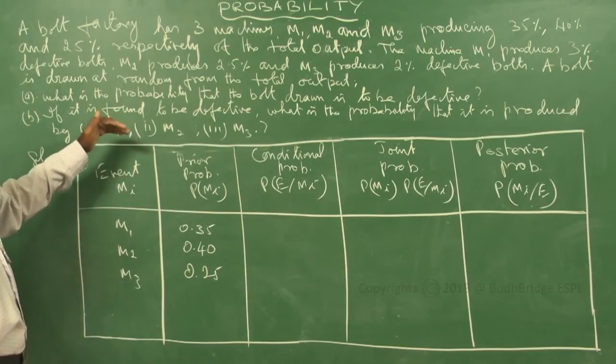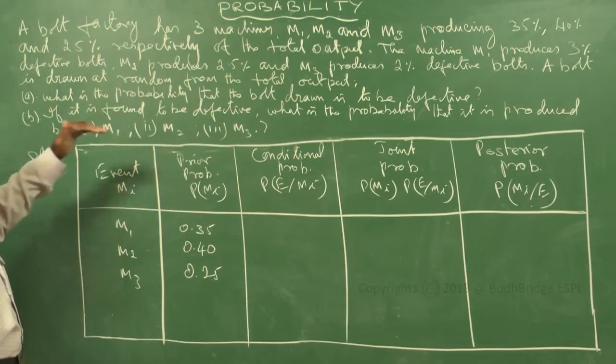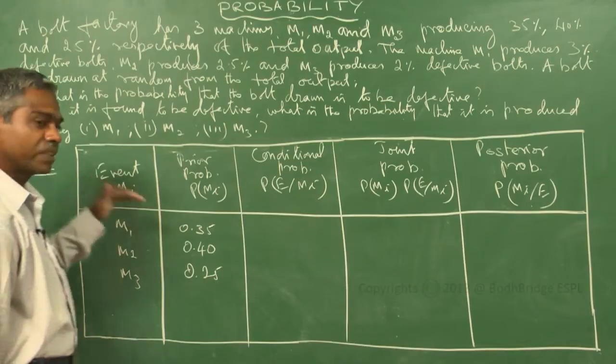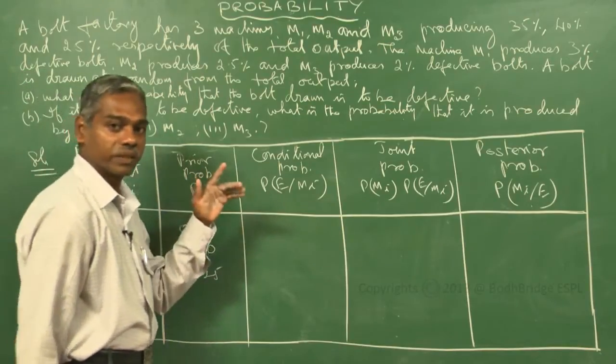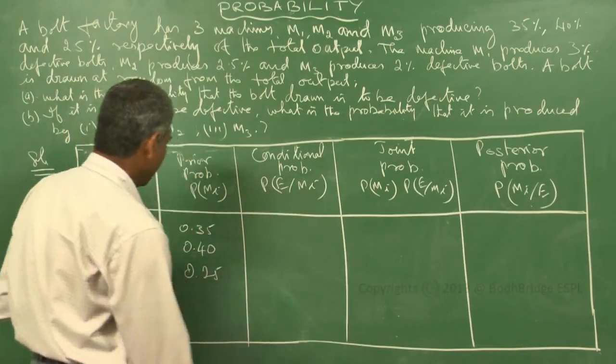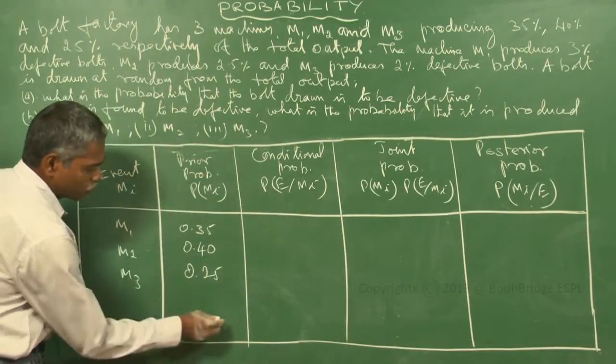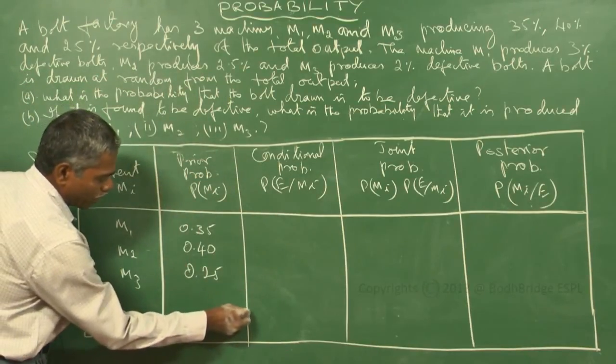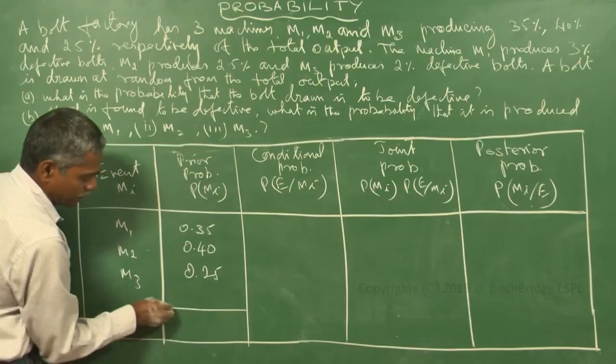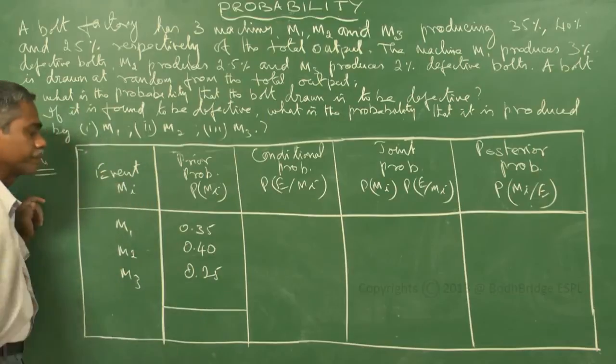While doing this type of problem, we should cross-check. The total of prior probabilities should be 100%, that is 1. So 0.35 + 0.40 + 0.25 = 1. We can proceed.